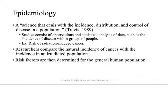Let's talk about the term epidemiology. This is a science that deals with the incidence, distribution, and control of disease in a population. What's the disease here? It is what we call an etiologic or disease-causing process. That disease-causing process is radiation - we're going to treat radiation as a disease-causing process and study it epidemiologically. These studies consist of observations over a long period of time with huge populations, and we look at incidence rates within these large populations.